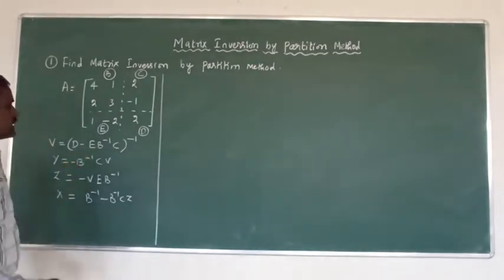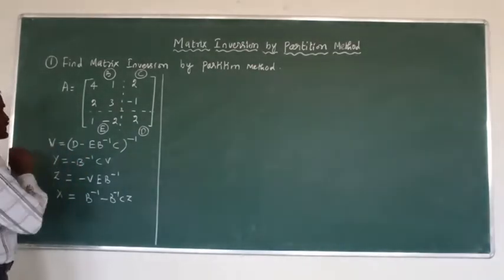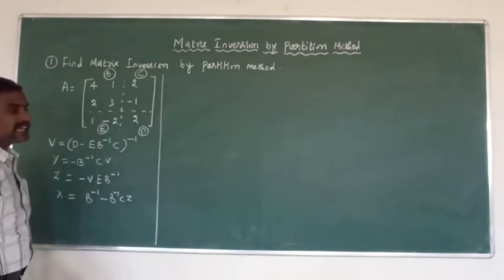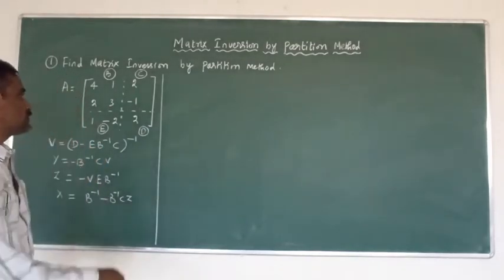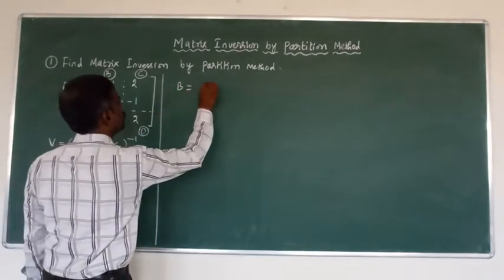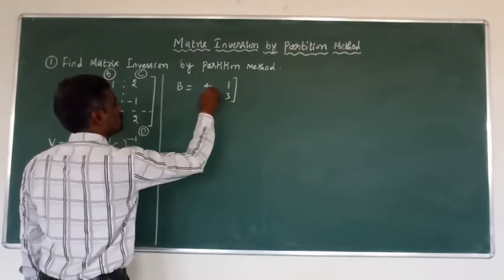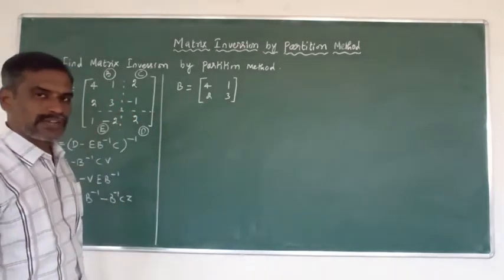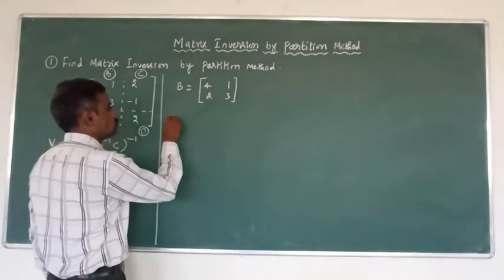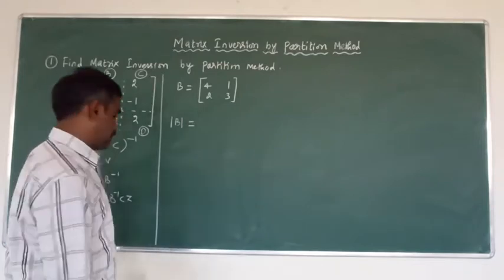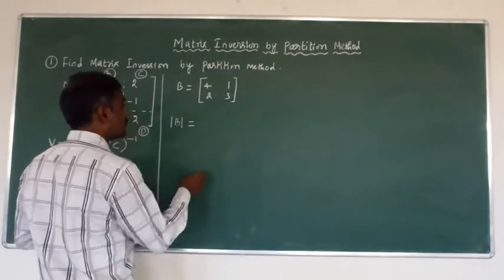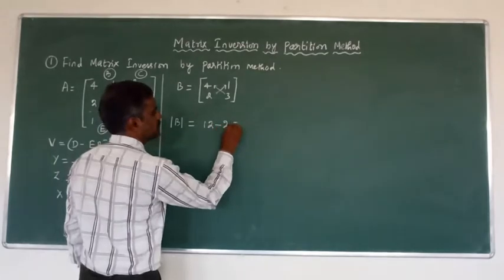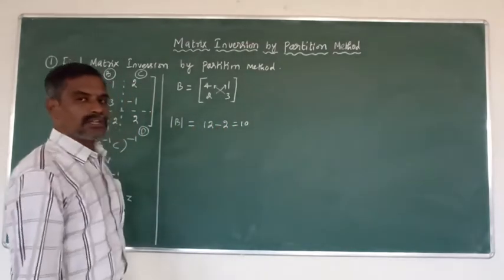First we have to find out V. The D value is available, the E value is also available, and the C value is also available. But here we have to find out B inverse — the inverse of the B matrix. Here B equals [4, 1; 2, 3]. This is the B value. The formula requires B inverse, so first we have to find out the modulus of B.